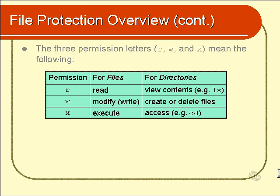Now those three permissions — R, W, and X — mean completely different things when talking about directories. For R, when talking about directories, that means it enables you to view the contents of the directory. In other words, you can do things like run ls on the directory. ls obviously lists the names of the files in that directory, which you might call the contents of the directory.